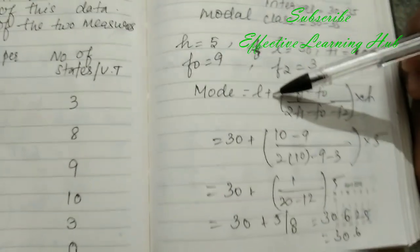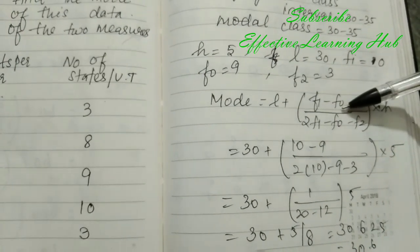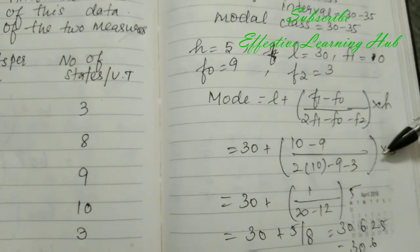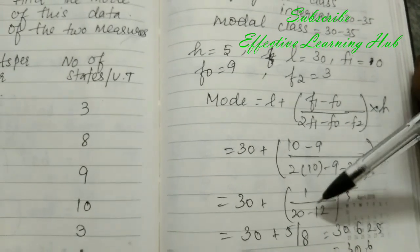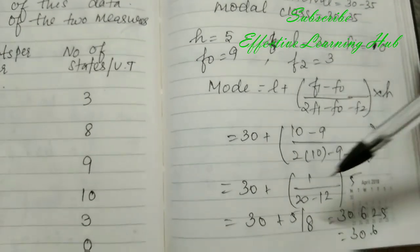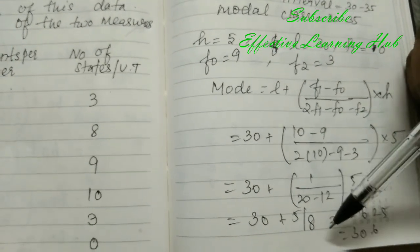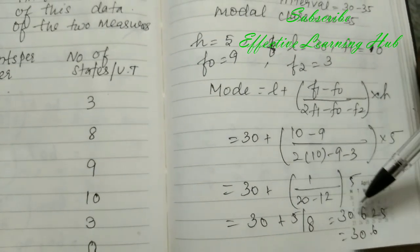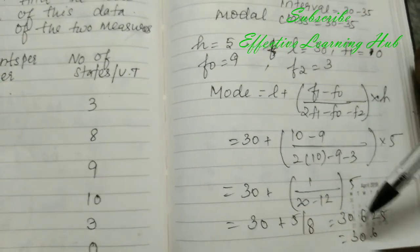Now substitute the values: 30 plus F1 value 10 minus 9 divided by 2 into 10 minus 9 minus 3 into 5. 10 minus 9 is 1, 2 into 10 is 20 minus 9 minus 3 minus 12 into 5, so 30 plus 1 into 5, 20 minus 12 is 8, 5 divided by 8 equal to 0.625, so 30 plus 0.625 equal to 30.625.